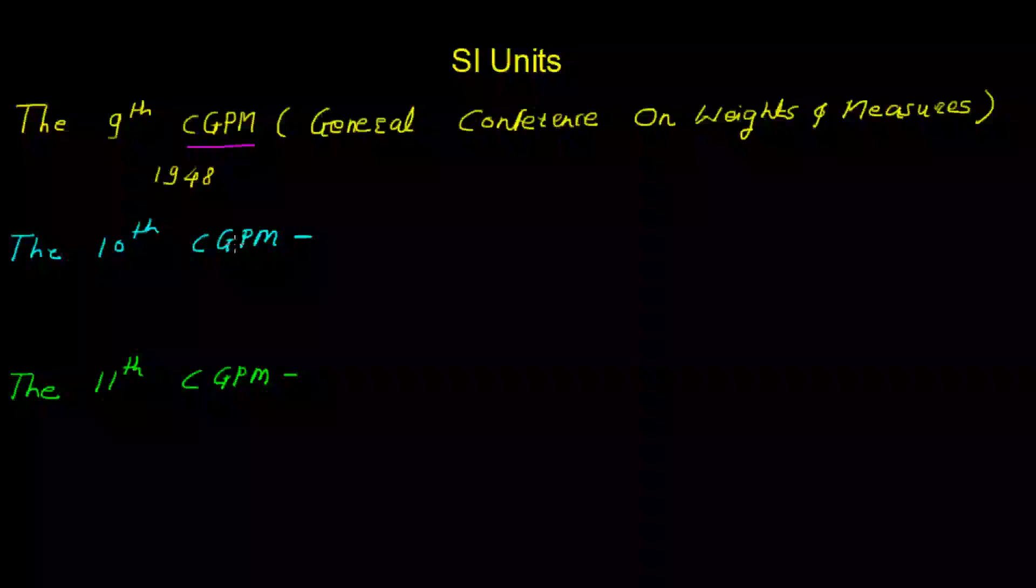the 10th CGPM was held after 6 years in 1954 and they adopted as base units of this practical system, the units of the following seven quantities: length, mass, time, electric current, temperature, amount of substance, and luminous intensity.